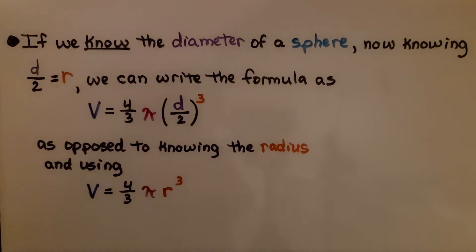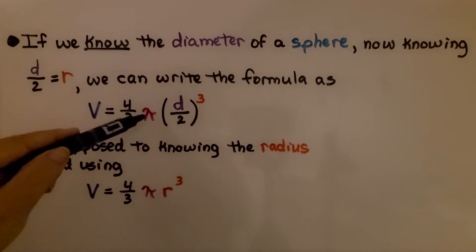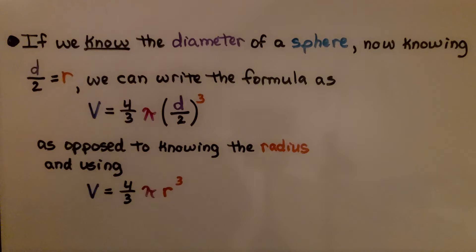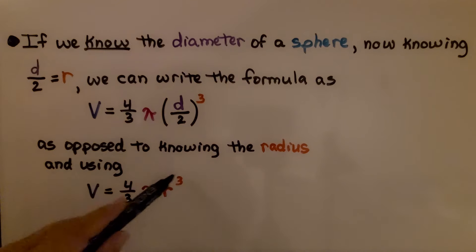So if we know the diameter of a sphere, now knowing that the diameter divided by 2 is equal to r, we can write the formula as volume equals 4 thirds pi times the diameter divided by 2 cubed. As opposed to knowing the radius and using the formula as we've seen it before, with 4 thirds pi r cubed.